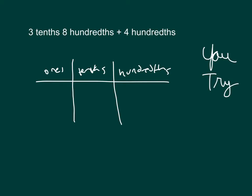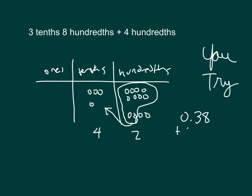Our first addend, 3 tenths, along with 8 hundredths. And then our next addend is 4 hundredths. I can bundle and regroup. So our answer is 4 tenths, along with 2 hundredths. Did you write that out? And there's your work numerically as well.